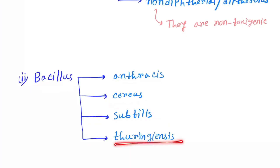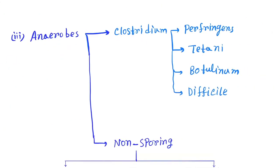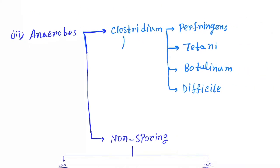Next is Bacillus anthracis, cereus, subtilis, and thuringiensis. Bacillus is spore forming, remember this, spore forming bacteria. Next is Anaerobes. So here Clostridium is spore forming.